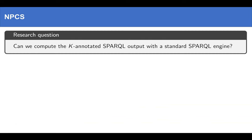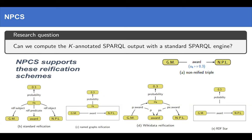Our main research question is can we compute the k-annotated output with standard SPARQL engine? The challenge is RDF graphs are not annotated. So, how can we annotate the graphs? The common practice is using reification. There are multiple ways to define it. NPCS supports all of them.